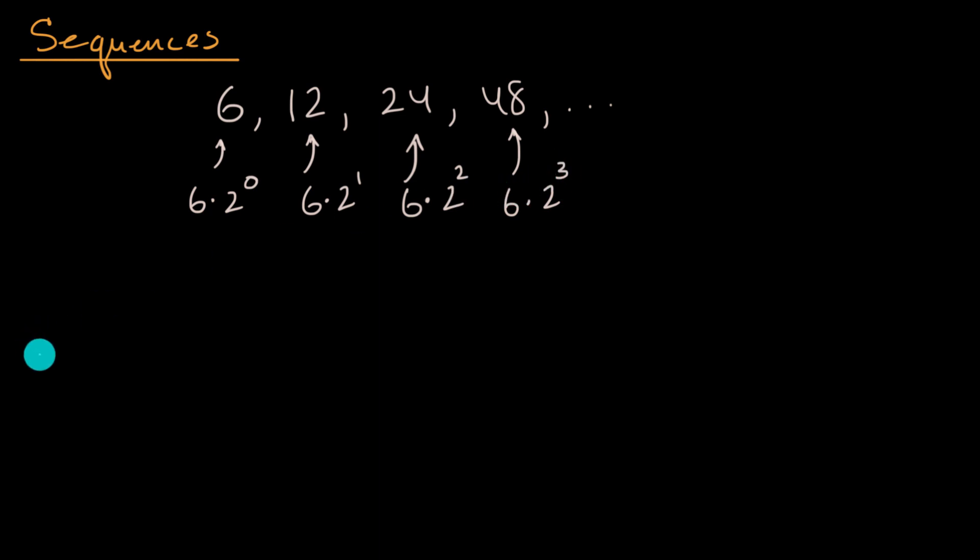And so one way to view this is if you view this as the zeroth term, we could define a function, call it a of n, where n is referring to our index or which term in the sequence. And it's equal to six times two to the n.